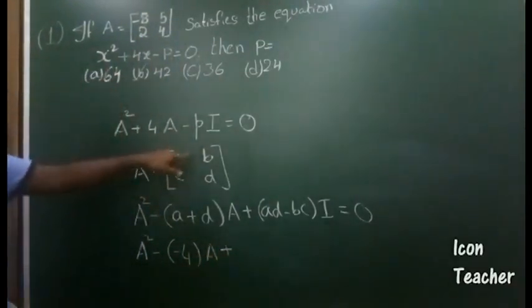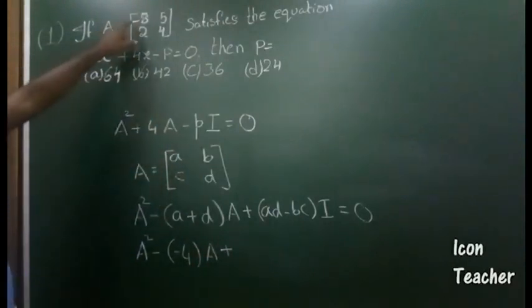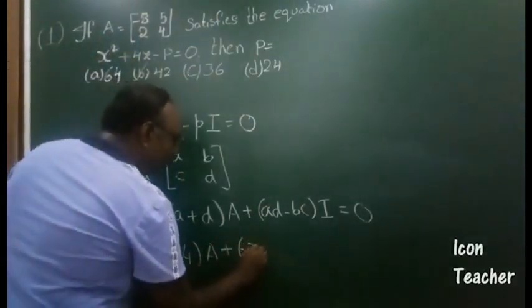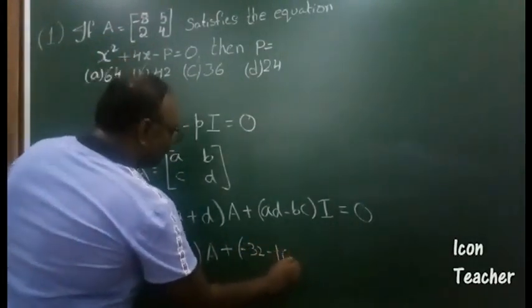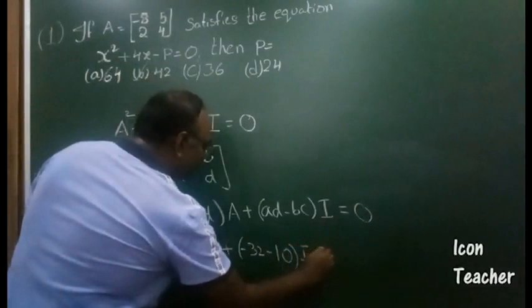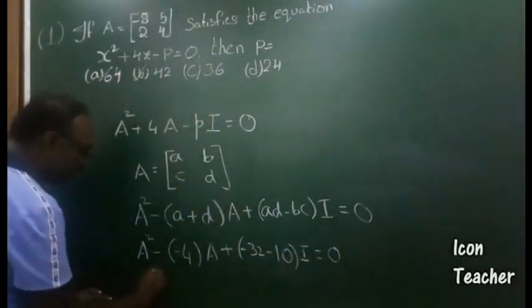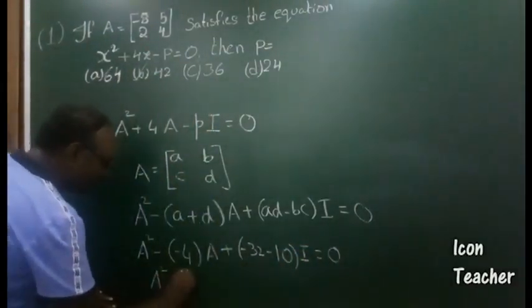of this matrix: -32 - 10. This into I is equal to 0, or we got this as A² + 4A - 42I = 0.